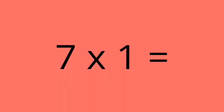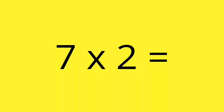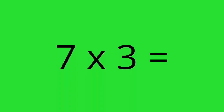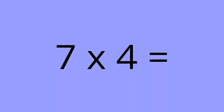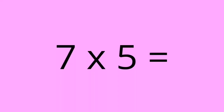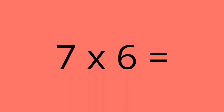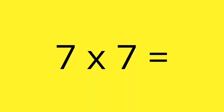7 times 2 equals 40. 7 times 3 equals 21. 7 times 4 equals 28. 7 times 5 equals 35. 7 times 6 equals 42.